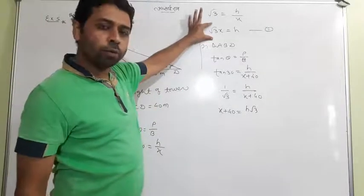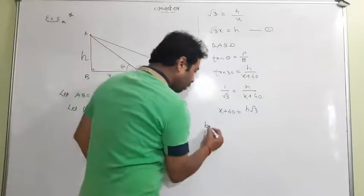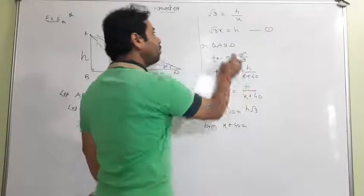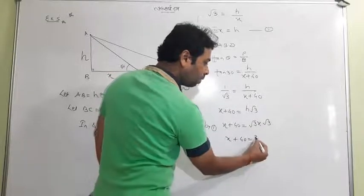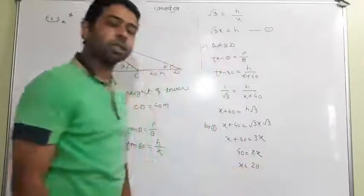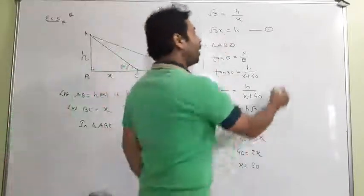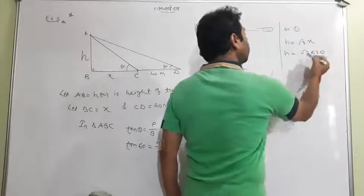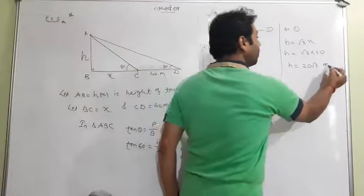From Equation 1 we have H = √3·X. Substituting into Equation 2: X + 40 = √3·X · √3 = 3X. So 40 = 3X − X = 2X, giving X = 20. Now to find the height H, go back to Equation 1: H = √3·X = √3 × 20 = 20√3. Since the value of √3 is not given in the question, the answer is 20√3 meters.